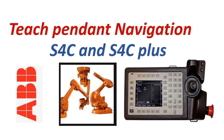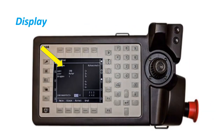Our topic for today is Teach Pendant Navigation for S4C and S4C Plus ABB robot. The display is used to display all information during programming, to change programs, etc. It can accommodate 16 lines, and each line can accommodate 40 characters.